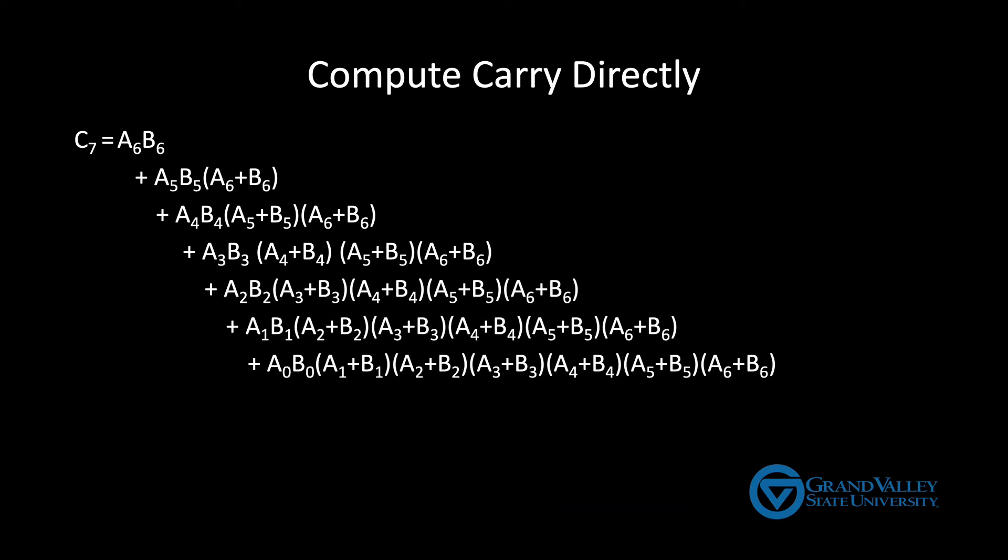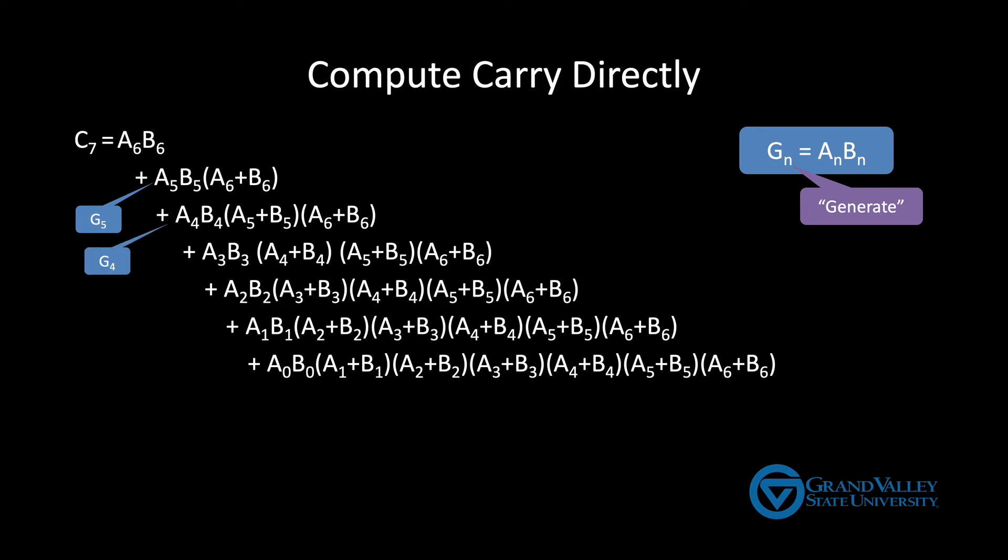So let's clean it up a bit. First, we'll define G sub n to be a n and b n. G in this case stands for generate. We make this substitution because when both a n and b n are true, it means that column generates a carry. Defining G in this way allows us to clean up the formula a little bit because we can replace a five b five with G five and we can replace a four b four with G four and so on.